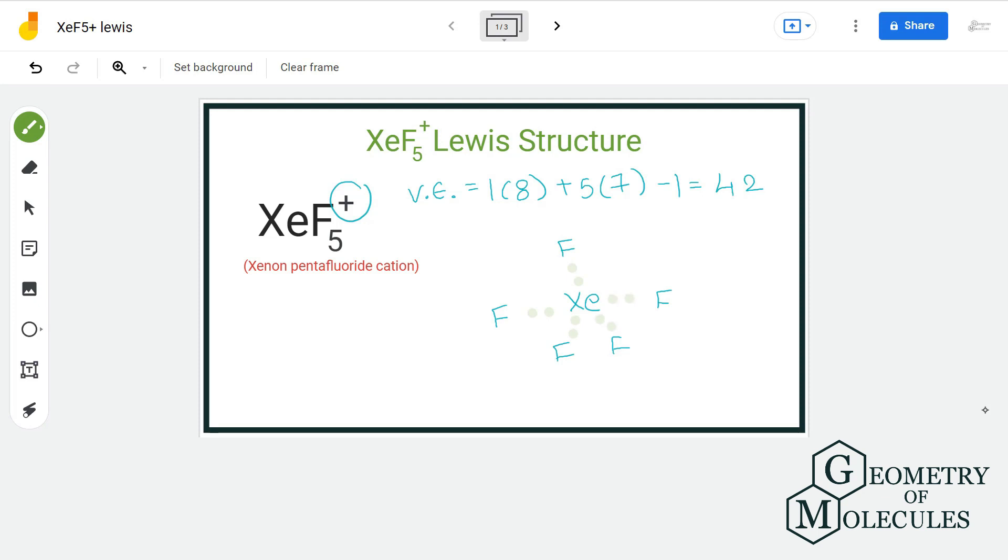As you can see here, fluorine atoms need 6 more electrons for complete octet, so we will assign each fluorine atom 6 more electrons.